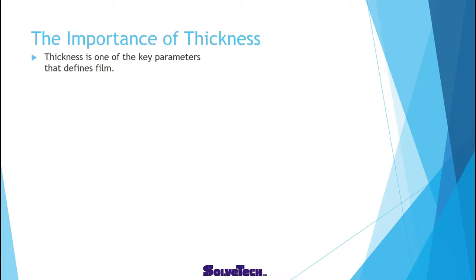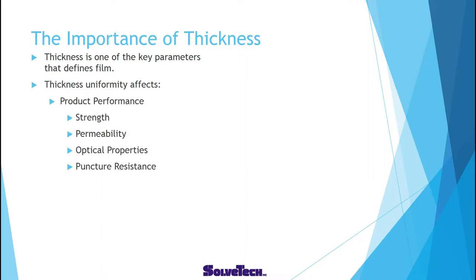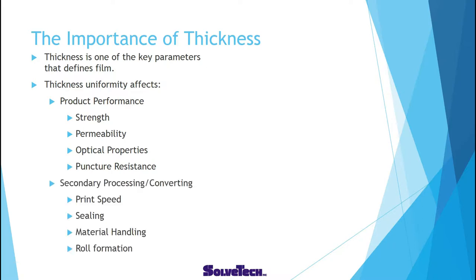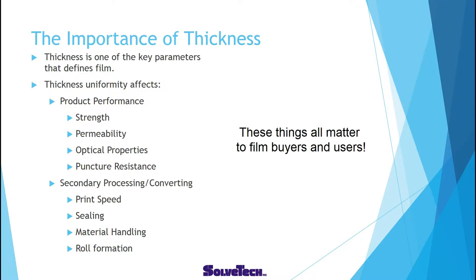Thickness is one of the key parameters that defines film. When you think about film, it's thin — that's what makes it film. Thickness uniformity affects product performance, including strength, permeability, optical properties, and puncture resistance, and then secondary and converting processes, including print speed, sealing, material handling, and roll formation. All of these things matter to film buyers and users.